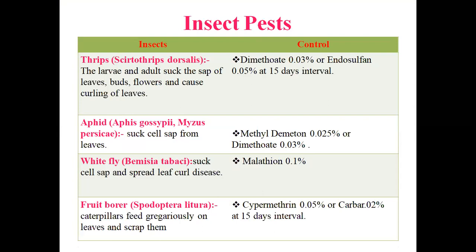Insect pests: Thrips (Scirtothrips dorsalis) — you should know how thrips looks, its scientific name, and damage. Dimethoate can be used for thrips. Thrips and mites are major problems in chili. Thrips cause upward curling of leaves — leaves become crinkled and curl upward. Mites cause the same crinkled damage but the leaf shows downward curling. This is a key differentiator: upward curling for thrips, downward curling for mites.